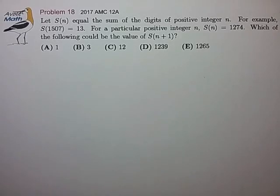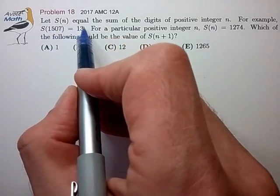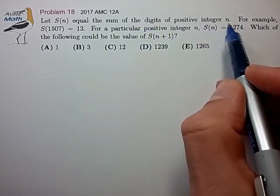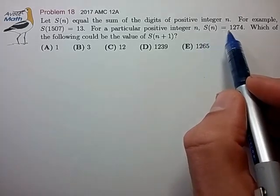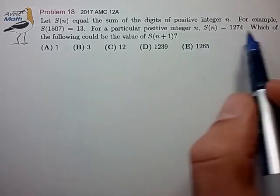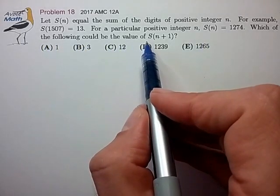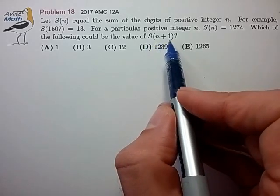Hi, this is problem 18 from the AMC 12A. Let S(n) equal the sum of the digits of a positive integer n. For a particular positive integer n, let S(n) equal 1274. Which of the following could be the value of S(n+1)?